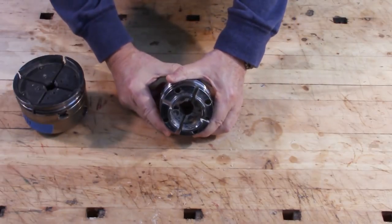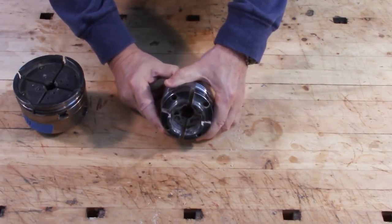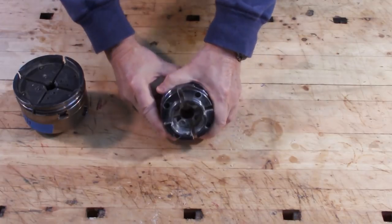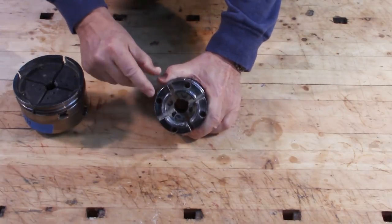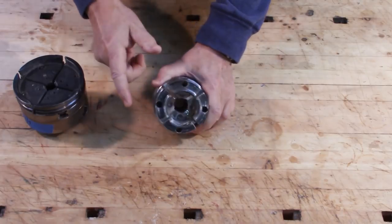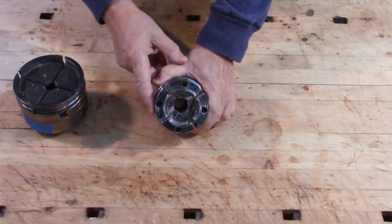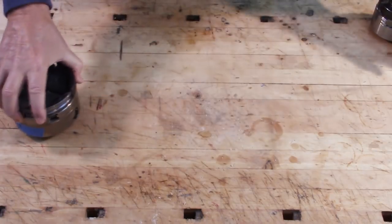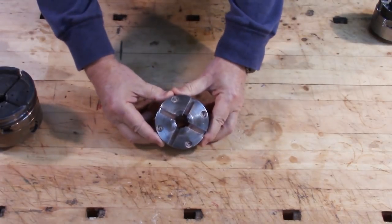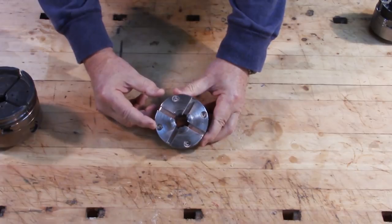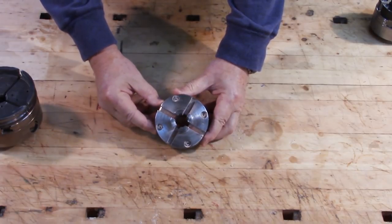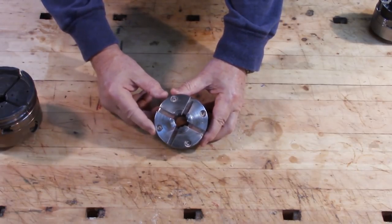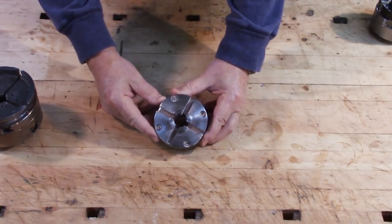This large set of jaws here, you can see it's got two set screws per jaw. This one here, there is no room for two set screws. Well, yes, there is. Let me correct myself. This one here has got a set screw here and then a set screw down inside. So if the chuck jaws are big enough, they're going to have two set screws.